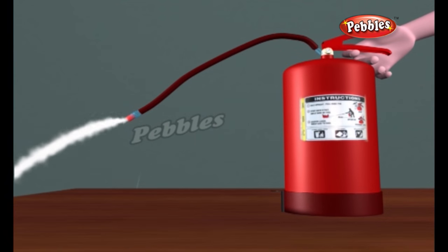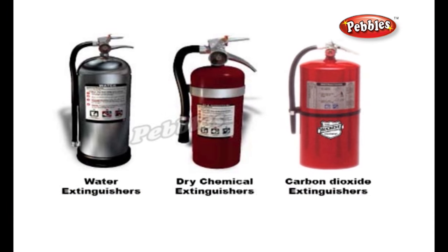The proper way to use the extinguisher is to aim it directly at the fuel rather than the flames themselves, and move the stream with a sweeping motion. There are three main types of extinguisher: water extinguishers, dry chemical extinguishers, and carbon dioxide extinguishers. It's important always to use the right extinguisher for the fire, as using the wrong one can put your life in danger and make the fire worse. For example, you must never use water extinguishers on electrical fires because you could electrocute yourself and the people nearby.